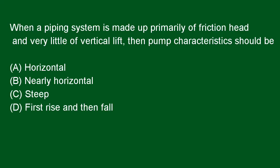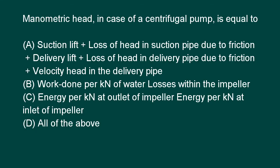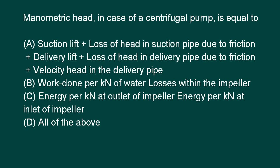Next question: When a piping system is made up primarily of friction head and very little vertical lift, then pump characteristics should be nearly horizontal. Answer B is right. Manometric head in the case of a centrifugal pump is equal to: suction lift plus loss of head in suction pipe due to friction, plus delivery lift, plus loss of head in delivery pipe due to friction, plus velocity head in the delivery pipe. Option D — all of these — is right.